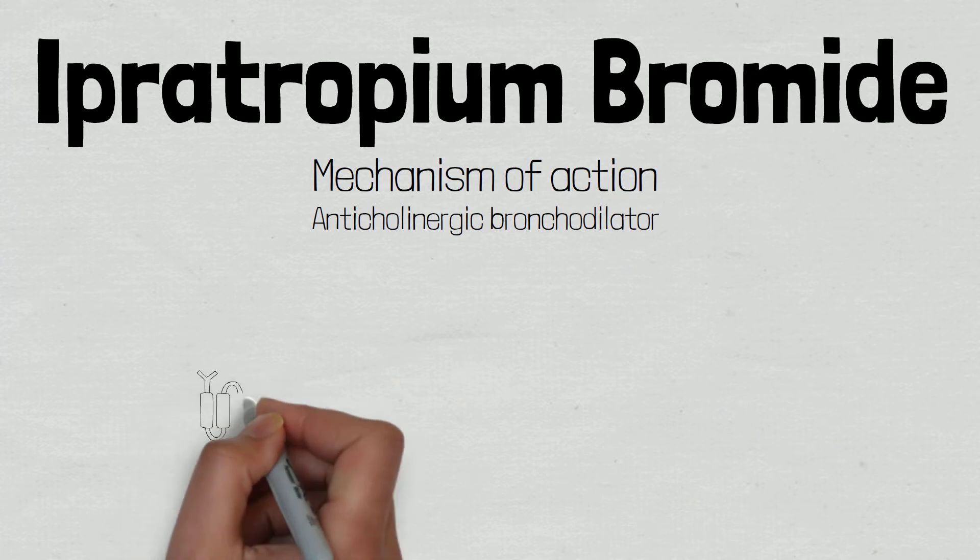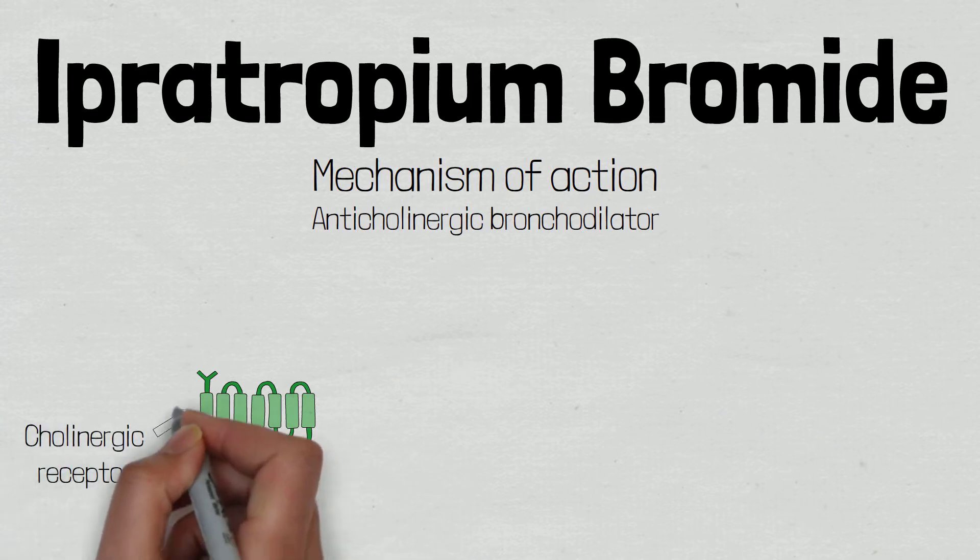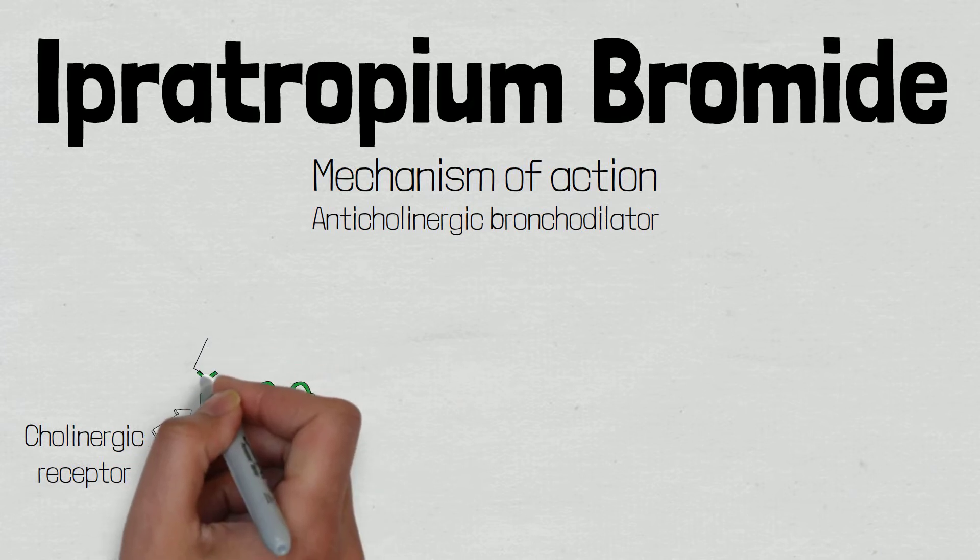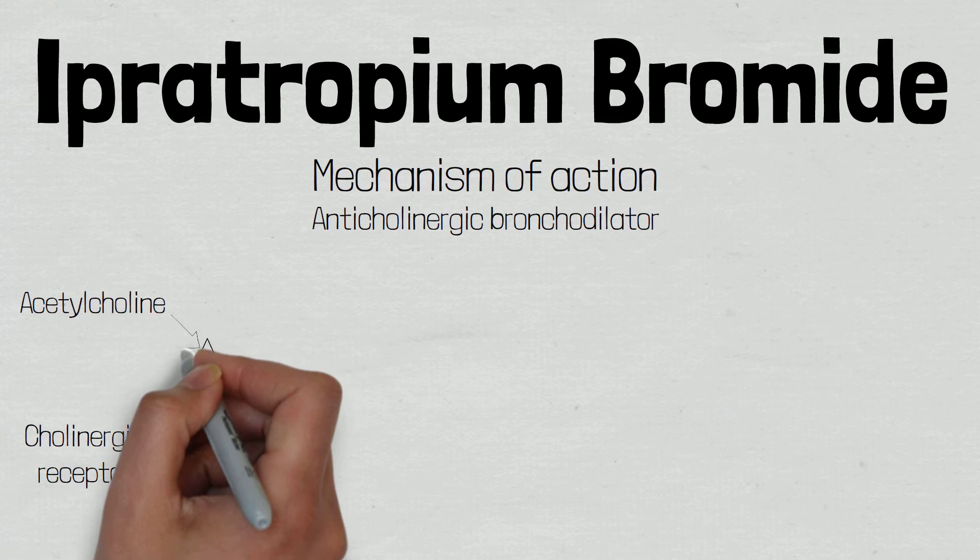Cholinergic receptors are those that are activated when they bind the neurotransmitter acetylcholine. They are located on various cells throughout the body and are part of the parasympathetic nervous system.